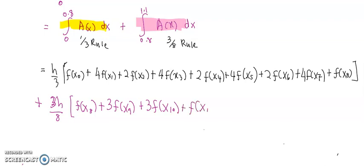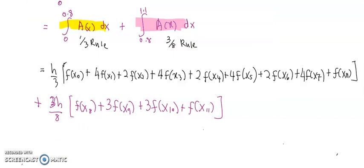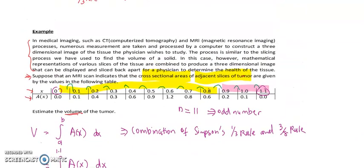Because we're dealing with many x values, before you write down the formula, you should label each value. Starting from x0, then x1, x2, x3, x4, x5, x6, x7, x8, x9, x10, x11.